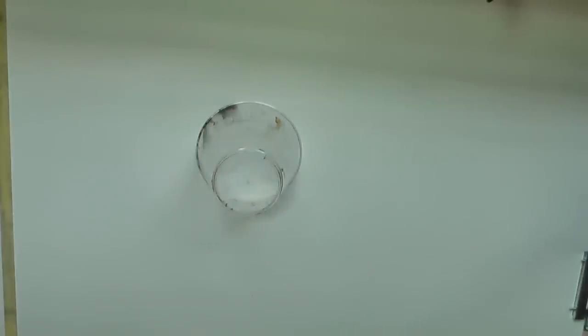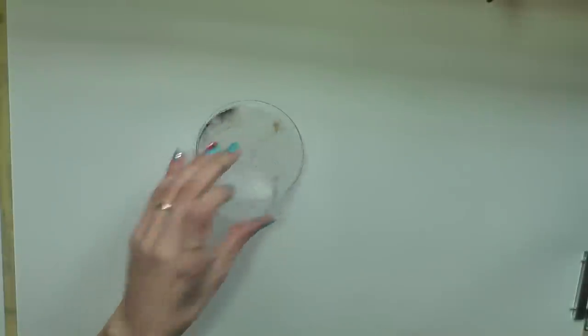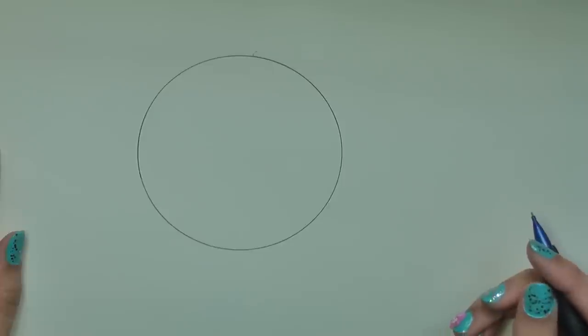So, I'm going to put my cup down and trace. Voila! Circle. So I'm drawing the Red Bird first. Let's see. How are we going to do this?